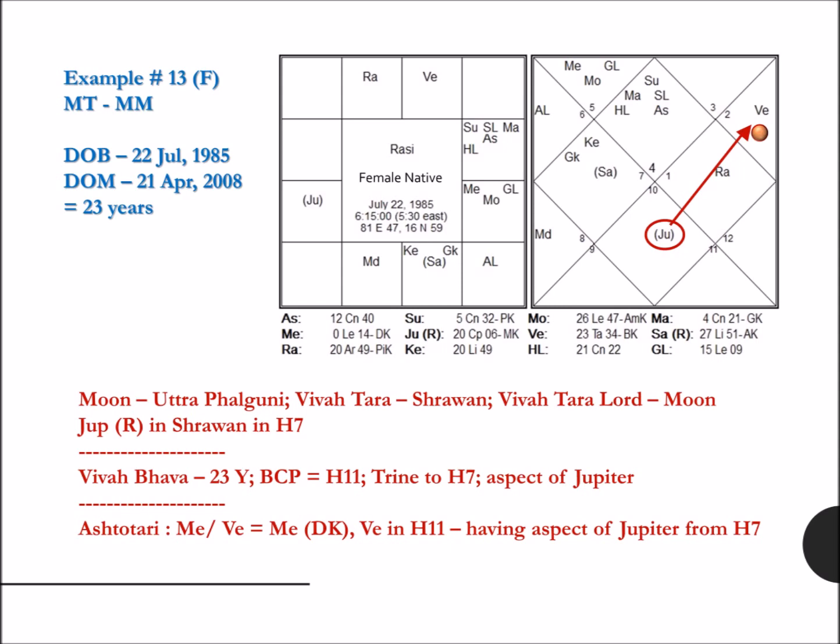Marriage happened in the 23rd year, which comes on the 11th house, a triennial house to the 7th house, having aspect of Jupiter which is placed in the Vivatara. Ashtotri Dasha: Mahadasha Mercury with Antara Dasha of Venus. Mercury is Dara Karak and Venus is placed in the 11th house with the aspect of Jupiter. All principles applied, confirming the result.